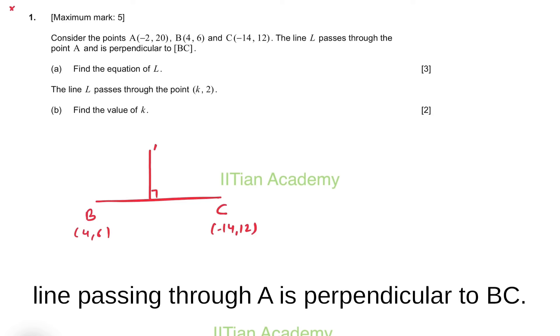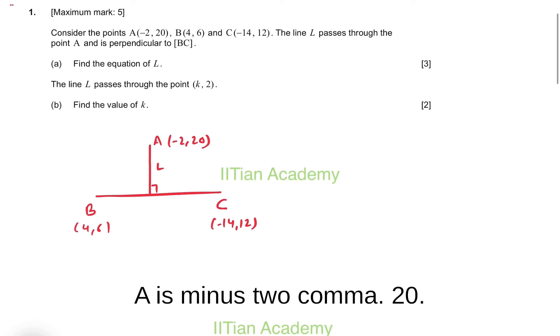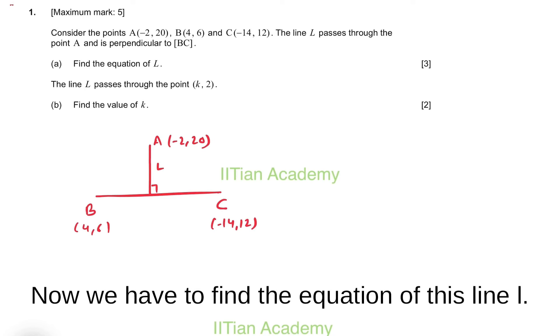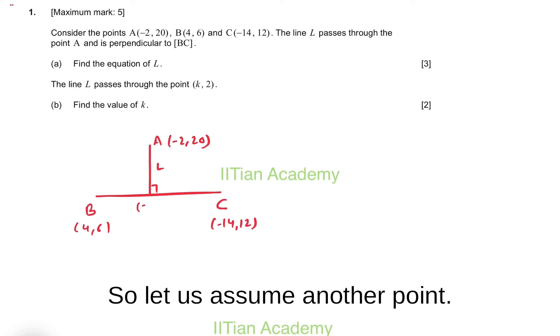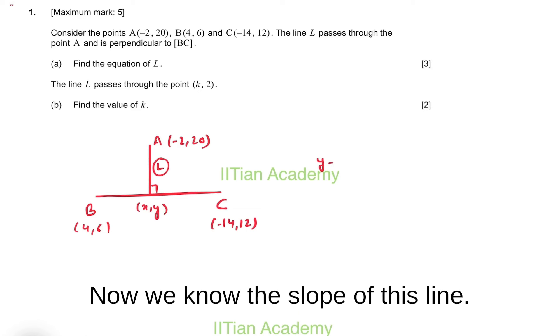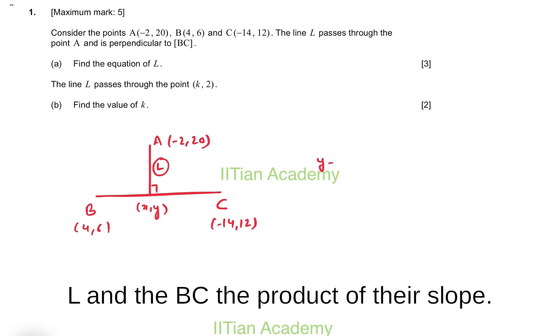Now we have to find the equation of this line L. Let us assume another point (x, y) on the line. We know the slope of line L and BC - the product of their slopes must equal minus 1.